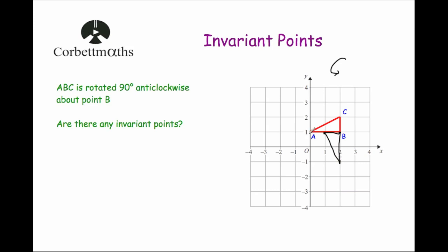Point A has moved, point C has moved. Point B has stayed in its position, so it's one invariant point. There's a line here which overlaps another line, but all the points on that line have moved to a different position — so none of those points have stayed in the same position. The only point that's stayed in the same position is point B. So are there any invariant points? Yes, and it's the point B.